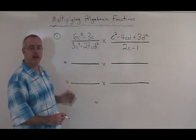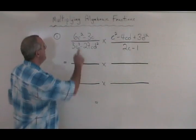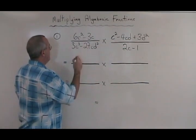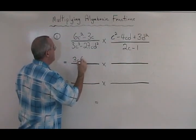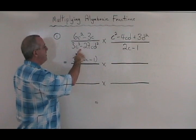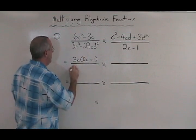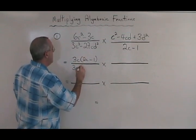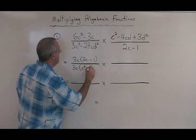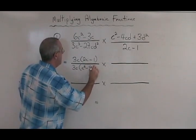The first step is to factor everything completely. The numerator on this side has a common factor of 3c. If we factor it out, we get 2c minus 1. The denominator also has a common factor of 3c. If we factor it out, we get c squared minus 9d squared.